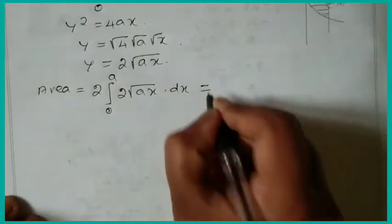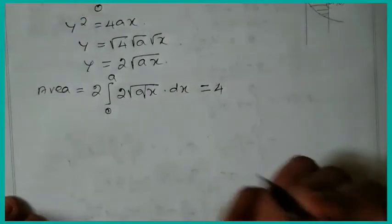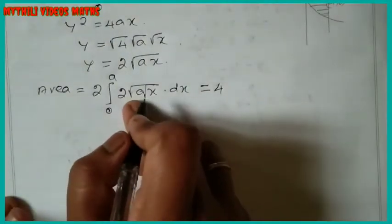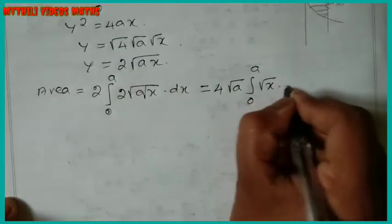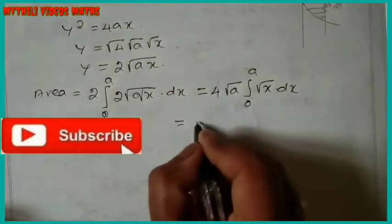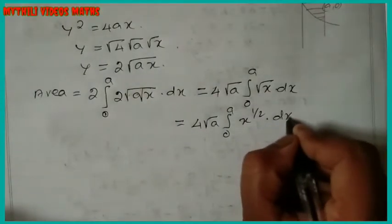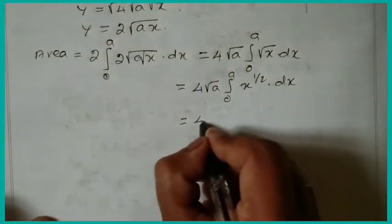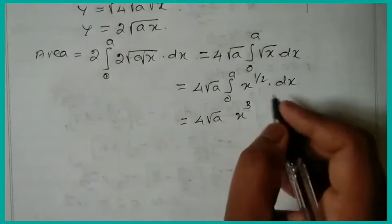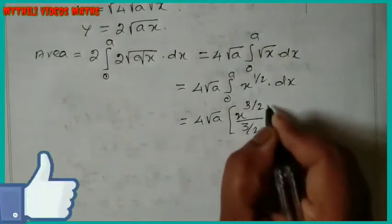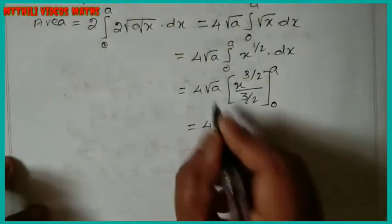So 2 × 2 = 4, giving area = 4√a × integral from 0 to a of √x dx = 4√a × integral from 0 to a of x^(1/2) dx. Integrating, we get 4√a × [x^(3/2) / (3/2)] from 0 to a.